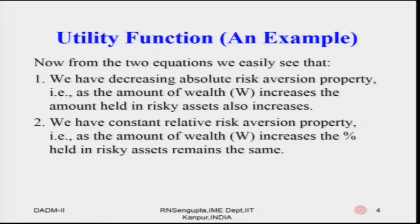From the two equations we can see: decreasing absolute risk aversion means that as wealth increases, the amount held in risky assets also increases. Constant relative risk aversion means that as wealth increases, the percentage held in risky assets remains the same. So conceptually, R and A together help us judge the functional form of the utility function.